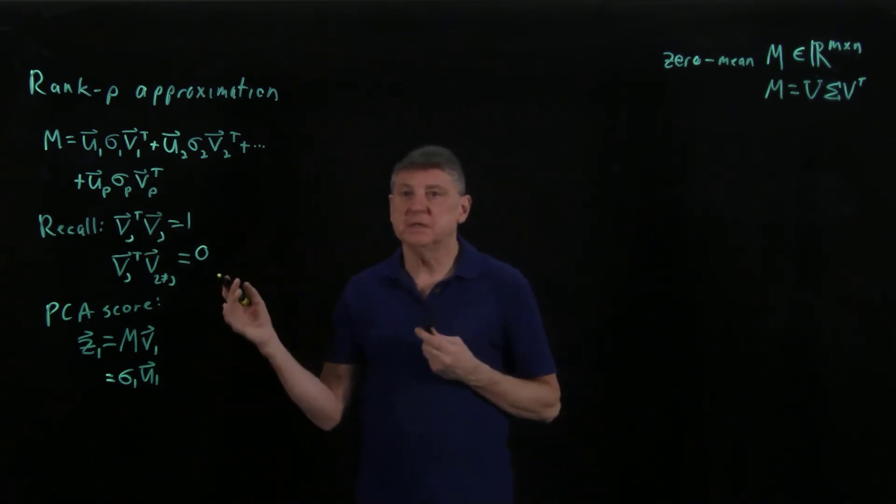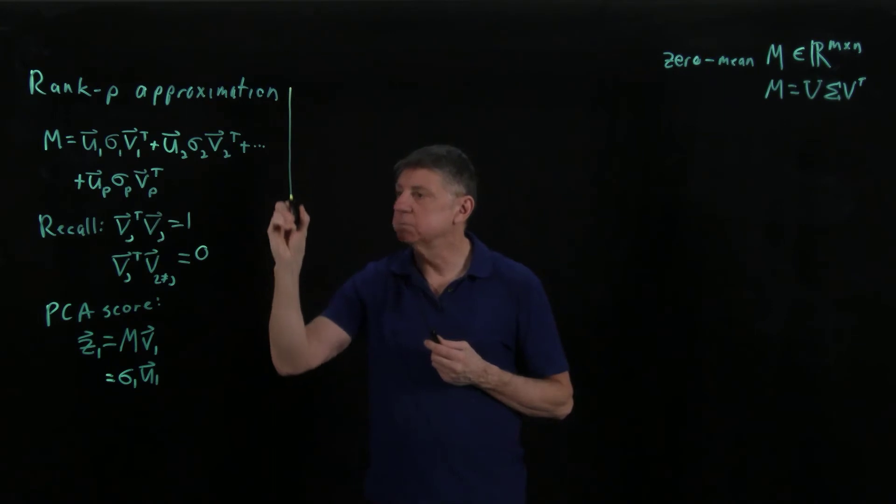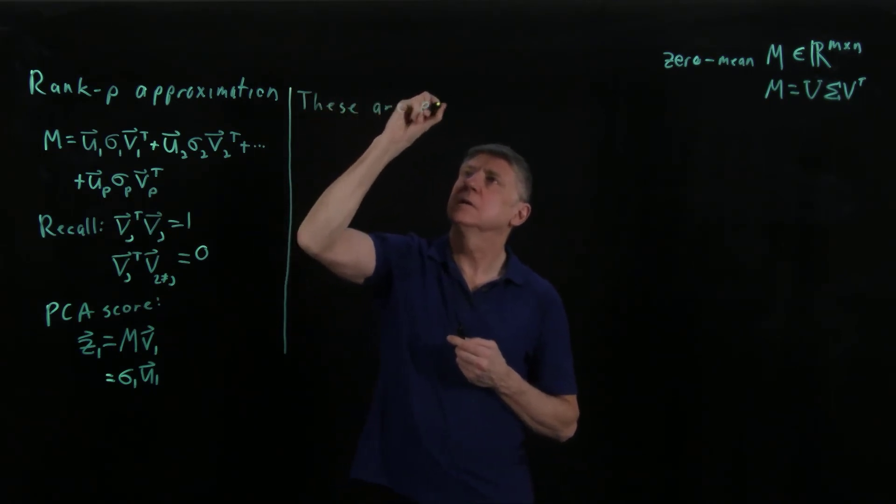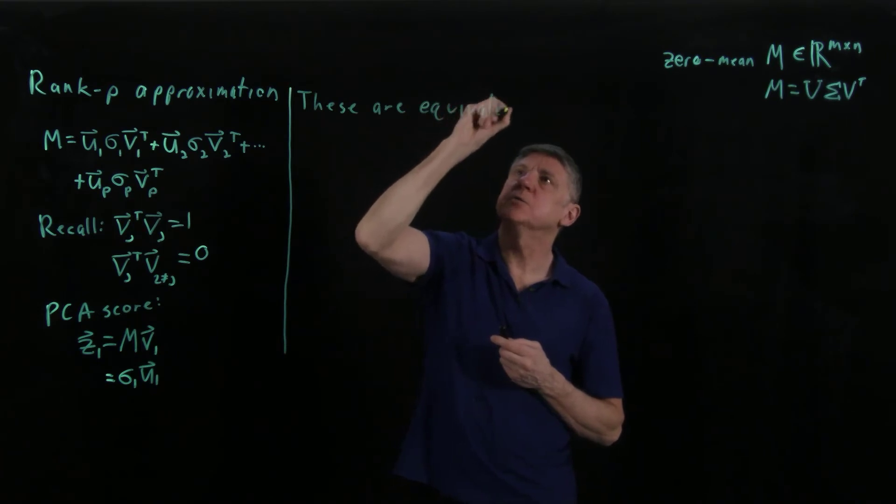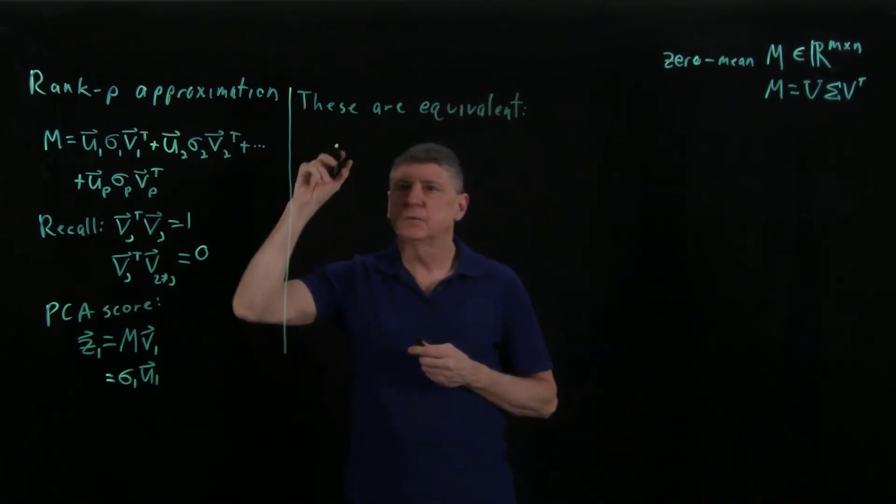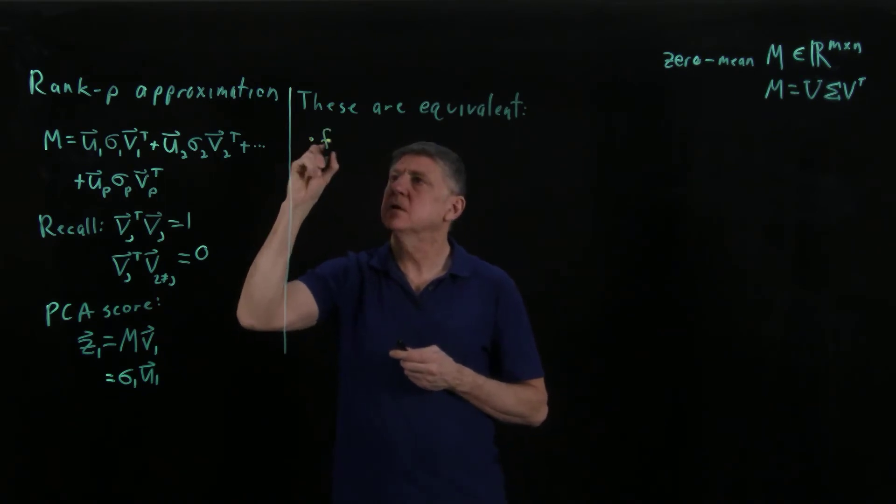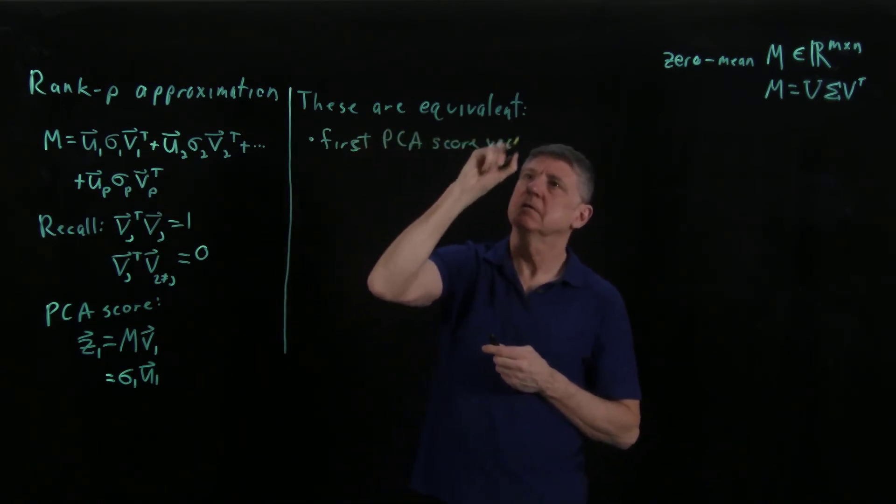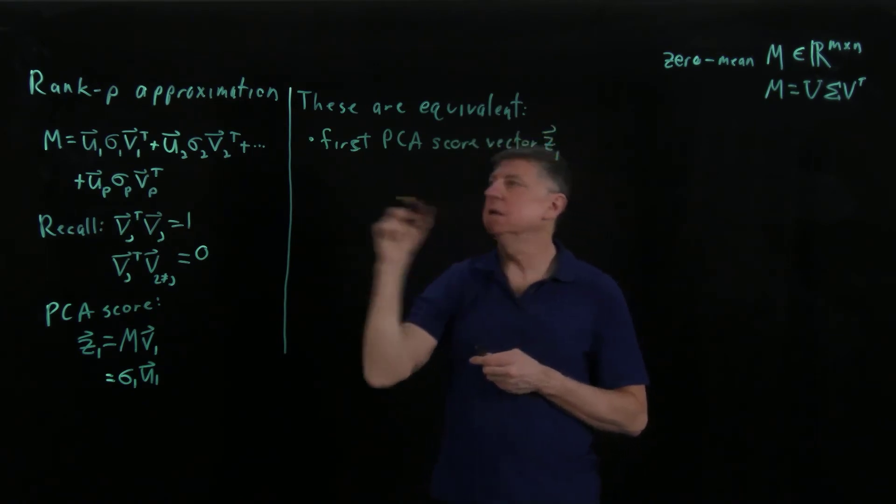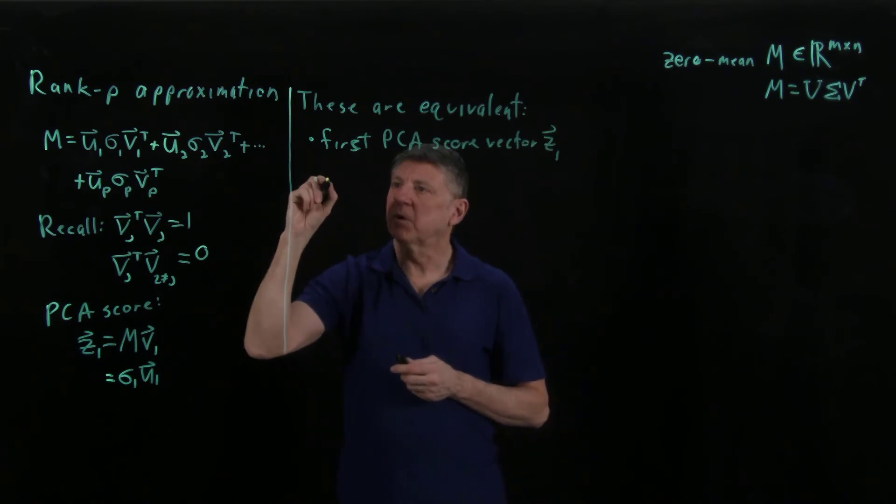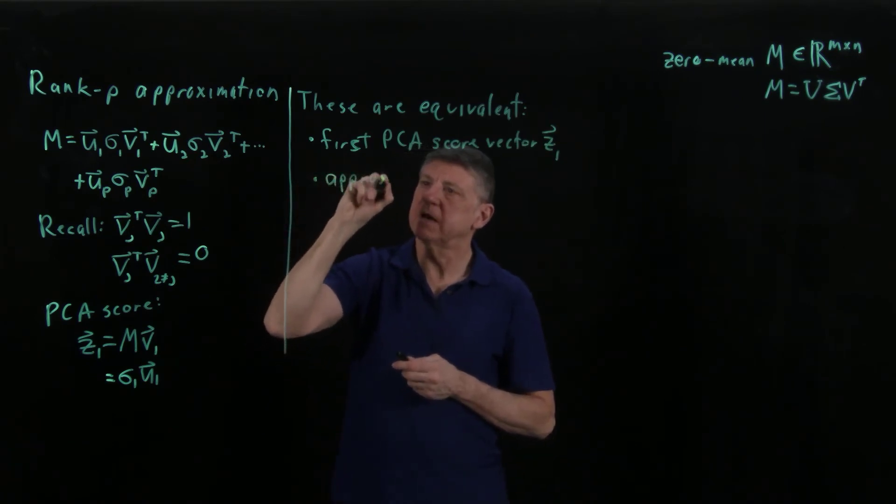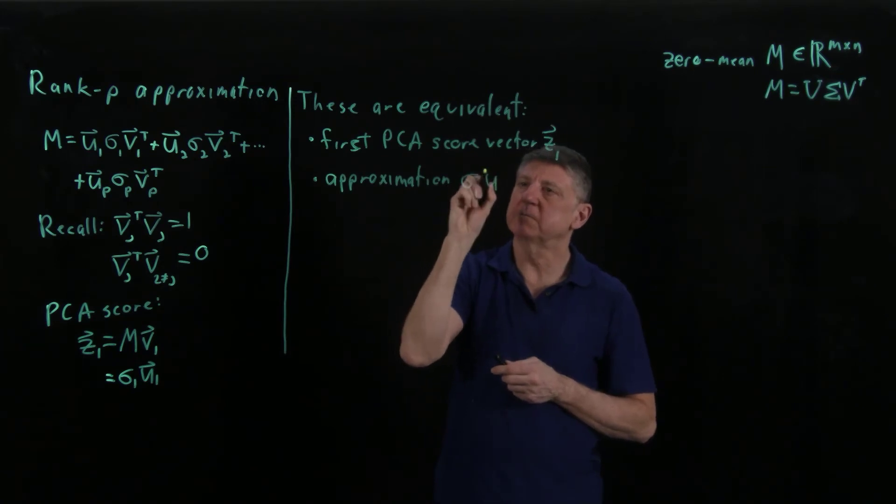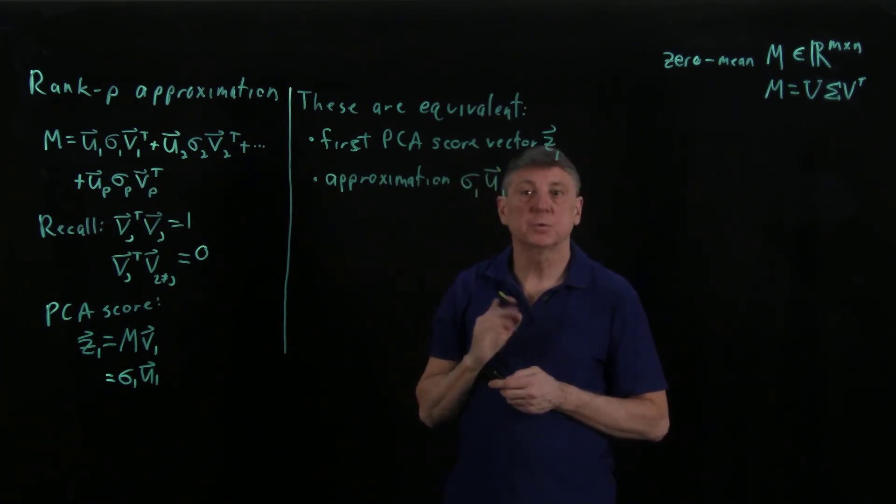Now, what that means is we can now make some statements. We can say these are equivalent. And what we can do is we can write what I just said. We can write that the first PCA score vector, which we're calling Z1, and the approximation that comes out of the Eckart-Young theorem, which is the first singular value times the first left singular vector. So, those are the same.